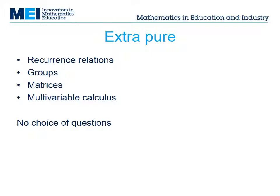Recurrence relations is a bit of discrete maths, but the parallels with differential equations will be obvious to students. Groups is very similar to the groups topic in FP3 of the current MEI spec, but we've added a little bit about infinite groups. The matrices topic rounds off what's already in Further Maths by including eigenvectors and eigenvalues. Multivariable calculus is similar to what's in FP3 now, but we've removed approximations using tangent planes. This topic comes to life with the ability to draw surfaces in 3D graphing technology.